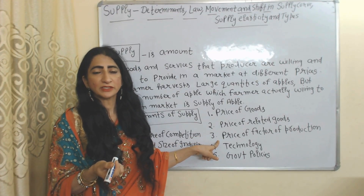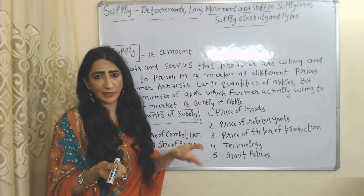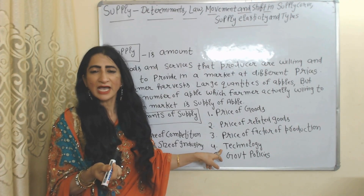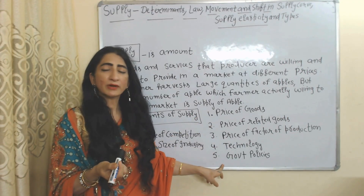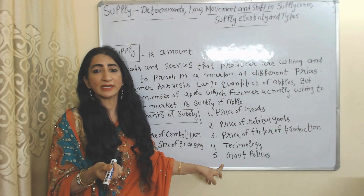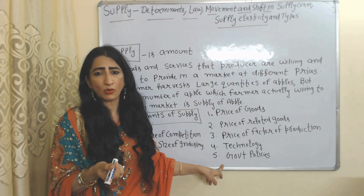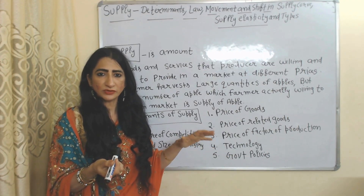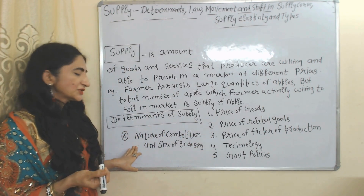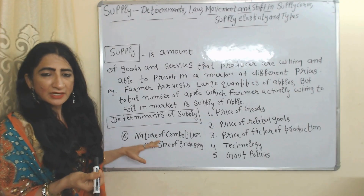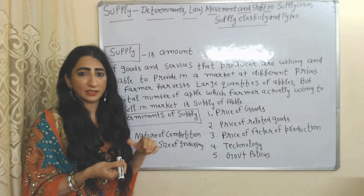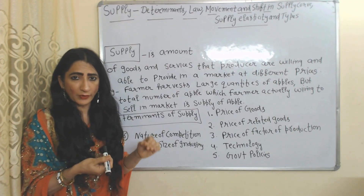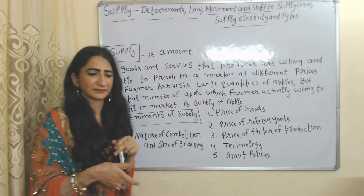Supply is also influenced by the price of factors of production. If prices of factors of production increase, cost of production increases and supply reduces. Improved and advanced technology reduces production cost, so supply increases. Government policies also matter: if government imposes many taxes on businesses, production cost increases and supply reduces, but if government provides subsidies, production cost reduces and supply increases. Nature of competition and size of industry also influence supply — supply is less in a monopoly compared to a perfectly competitive market.